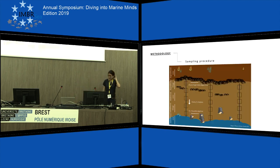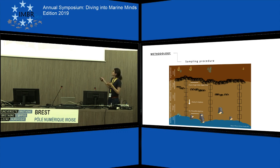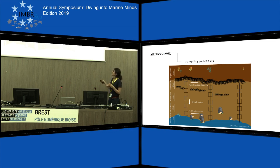We sampled four sites in Galway Bay. We laid three belt transects from the high algae line down to the splash zone, reaching the Nucella lapillus population. For each belt transect, we placed two quadrats per zonation band, and we collected all focal species in each quadrat.